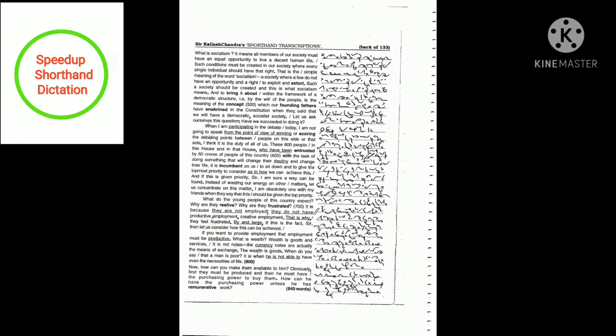Such a society should be created and this is what socialism means. And to bring it about within the framework of a democratic structure. By the will of the people is the meaning of the concept which our founding fathers have enshrined in the constitution when they said that we will have a democratic, socialist society.